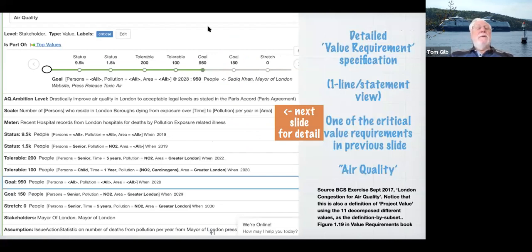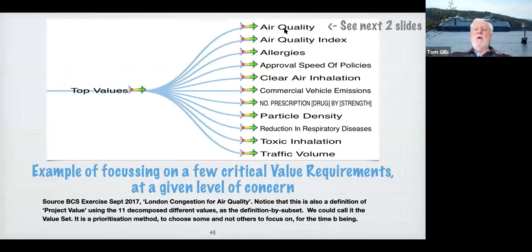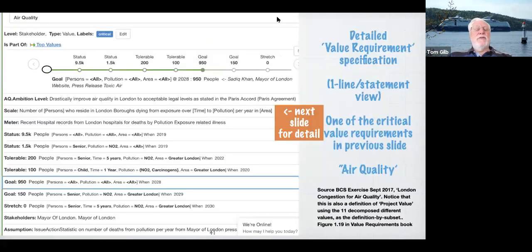Here is a specification object — a requirement specification object. To be very concrete, it is type 'value objective' or 'value requirement,' at the level of a stakeholder. It has the tag 'air quality,' which is part of the top values. This is actually generated automatically from the digital information stored in the object. It also keeps track and reminds us there are different levels here. If I click on 'top values,' I automatically go back to the top level and see all the different values — navigation through hot links.